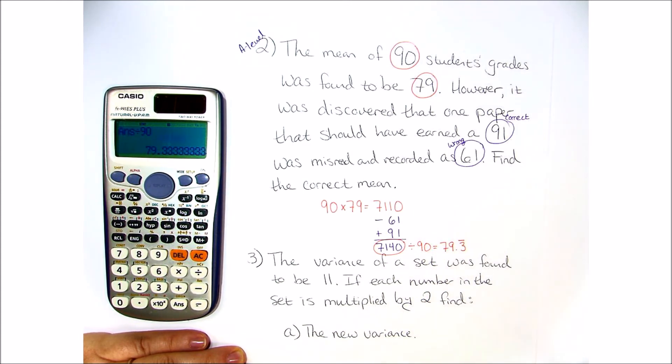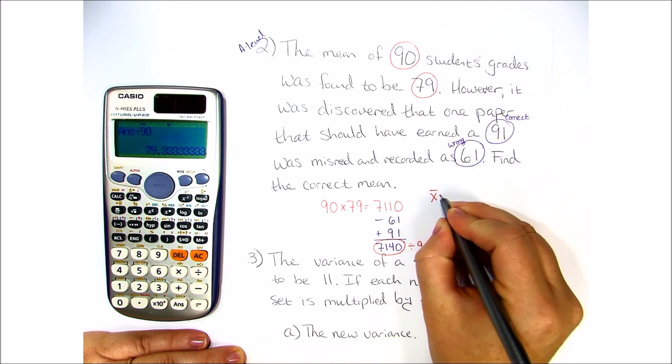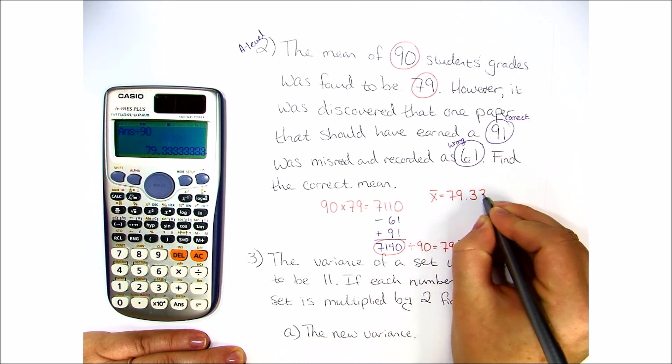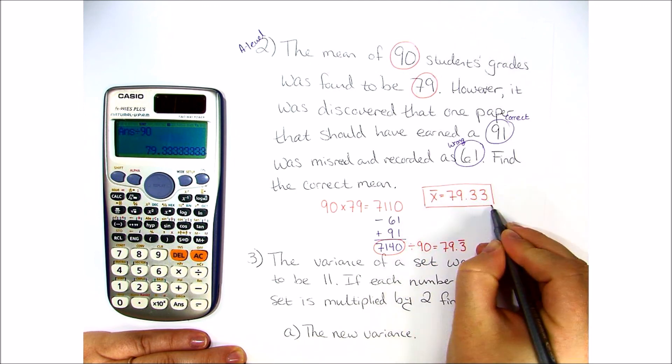Now in this class, we generally round to decimal points, so we're going to put that the mean is 79.33. And this is the answer to number two.